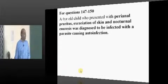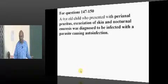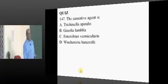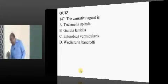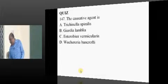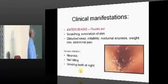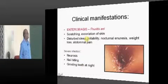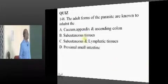6-year-old child, perianal pruritis, excoriation, nocturnal enuresis — what is the infection? And auto-infection is also present. Closing your eyes without seeing the options, you will tell: Enterobius vermicularis. Not a big problem and not a big challenge. Features include pruritis ani, scratching, excoriation of skin, and disturbed sleep.